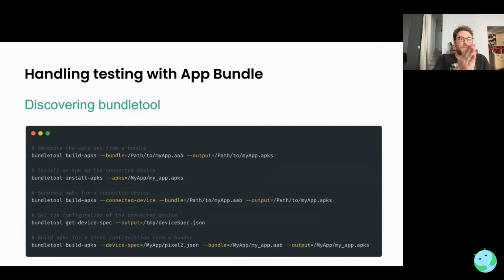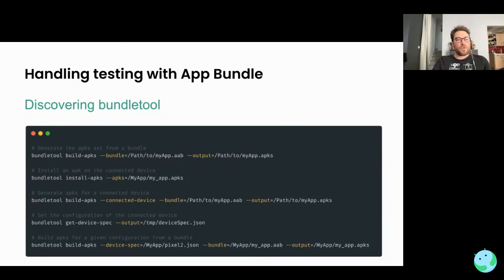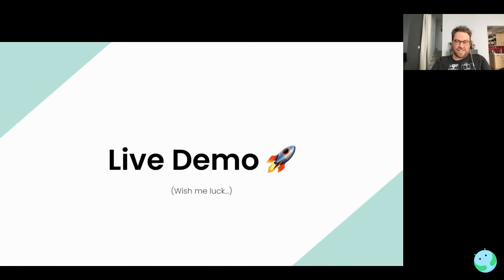Let's look at bundletool. The most useful command is build-apks, which builds a set of APKs from a given AAB, giving you all the APKs that can be built from it — you can then install the right APK on your device. There's also build-apks with a connected device flag which targets the right APK for the connected device. You can get the specs of a connected device and make a combination of those. Let me try a live demo.